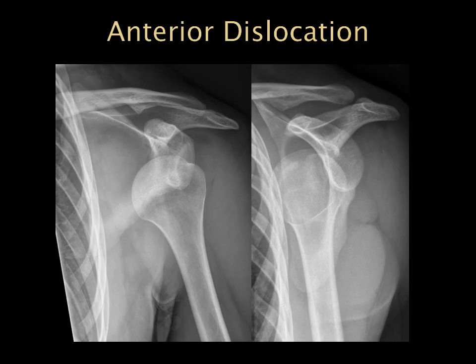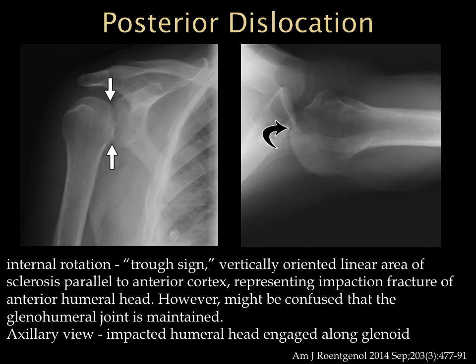One of our more common injuries in both pediatrics and adults is anterior dislocation, which you can see on frontal and transcapular views. A little harder to diagnose is posterior dislocation. On the frontal view, we see internal rotation and what's called the trough sign — a vertically oriented linear sclerosis paralleling the anterior cortex from an impaction injury. On the frontal view alone you might not pick up the actual dislocation, whereas on the axillary view we can see the impacted humeral head engaged along the glenoid posteriorly.